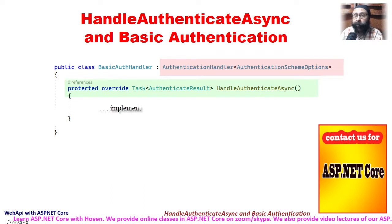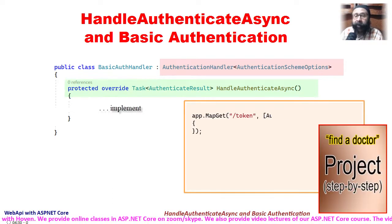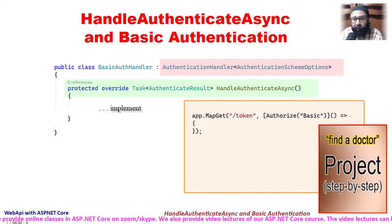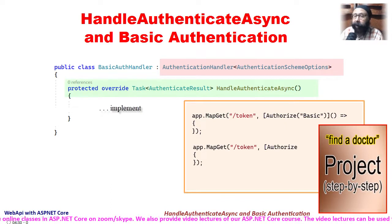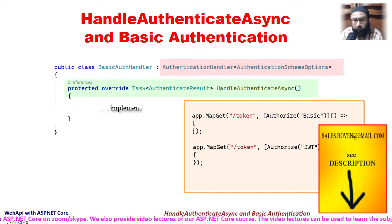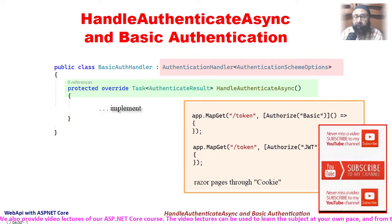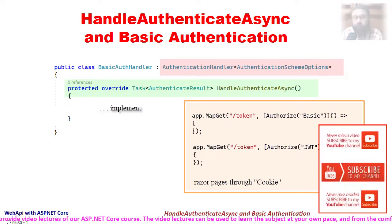For example, you might want one web API to be authorized through basic authentication and another one through a JWT-based authentication, and yet you might want your Razor Pages through a cookie-based authentication.